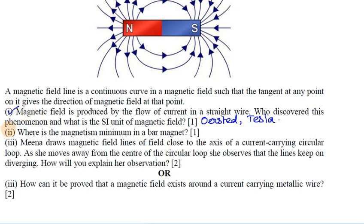Where is the magnetism minimum in a bar magnet? In a bar magnet, the magnetism is minimum at the center of the magnet. The center has minimum magnetism and the poles have maximum magnetism.